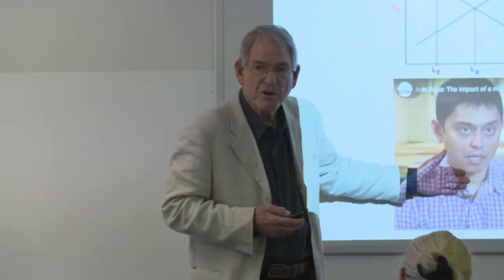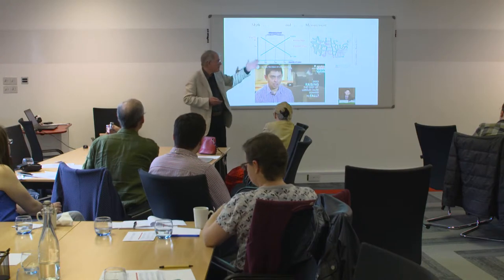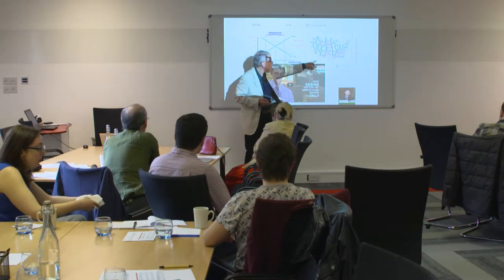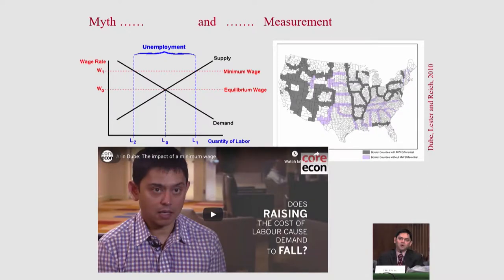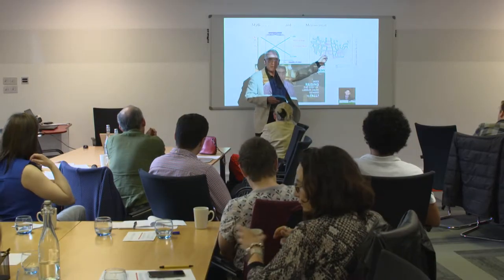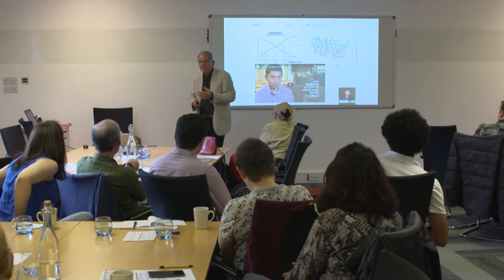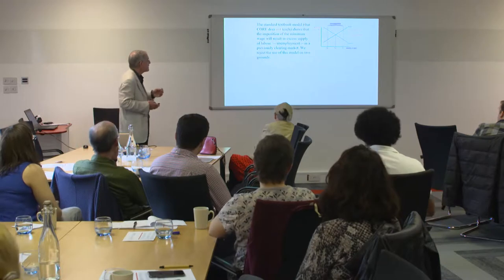My colleague Aaron Dubé at the University of Massachusetts, a contributor to our work on the labor market model, has done a number of studies. This lovely map shows adjacent counties in the US where one had a minimum wage change and one didn't. It's a fabulous study and very good for teaching, because visually it allows you to teach what a diff-in-diff estimator is without getting complicated. This evidence has really piled up over 30 years. The effects of the minimum wage are certainly very small — much smaller than anyone would have anticipated.